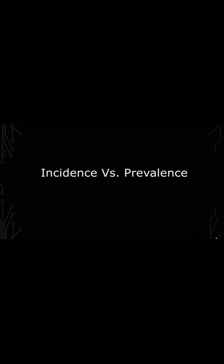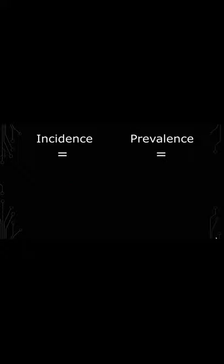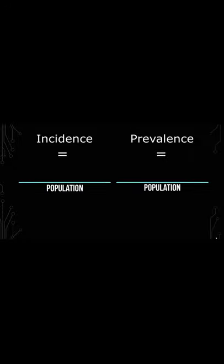In this video, I'm going to go over incidence and prevalence, common calculations that are used in epidemiology. Incidence and prevalence can be mixed up quite a bit because both of them have population in the denominator. The numerators are different. For incidence, it's the amount of new cases in a particular time period, say like a day, a week, or a month.